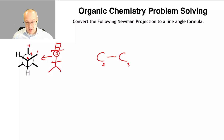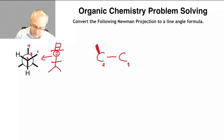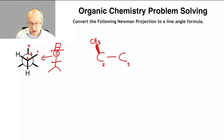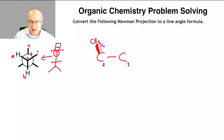Now I have to draw in carbon number one. To keep the conformation the same, according to my point of view, this methyl group is going to hit my top hat — it's coming up and towards me. This hydrogen over here, H-A, is up and away from me. So H-A gets the dashed lines and it's pointing up and going away.